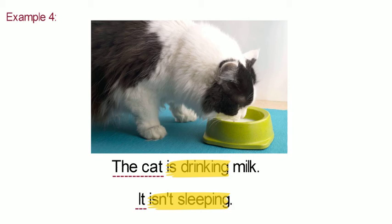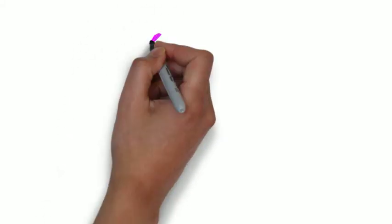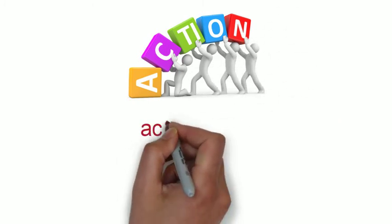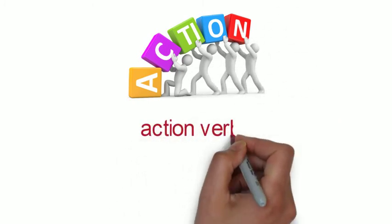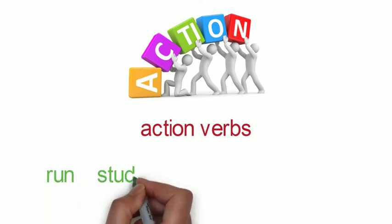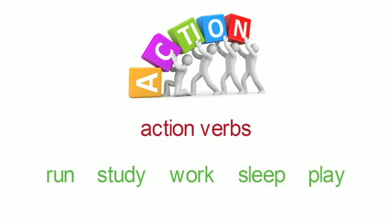Now you know what the present continuous tense is, when you can use it, and how you can form it. The present continuous tense tells us about actions that are happening now. So we can only use the present continuous tense with action verbs, like run, study, work, sleep, and play.